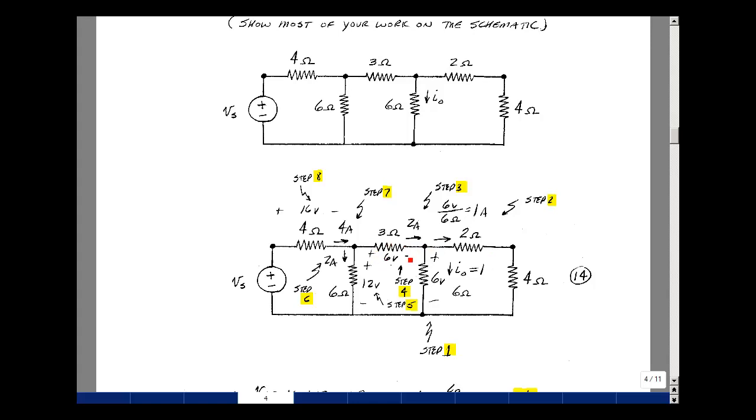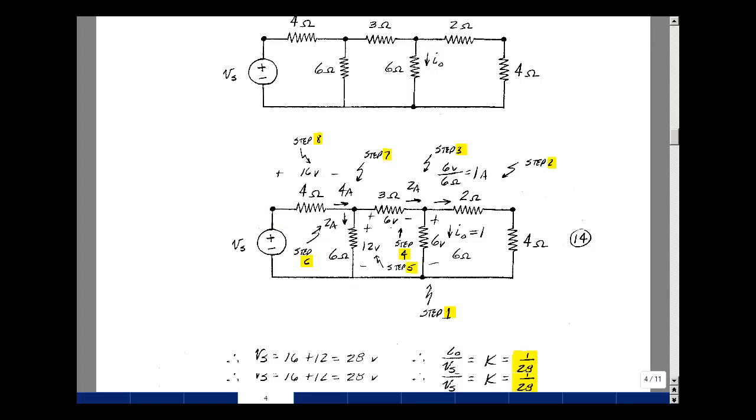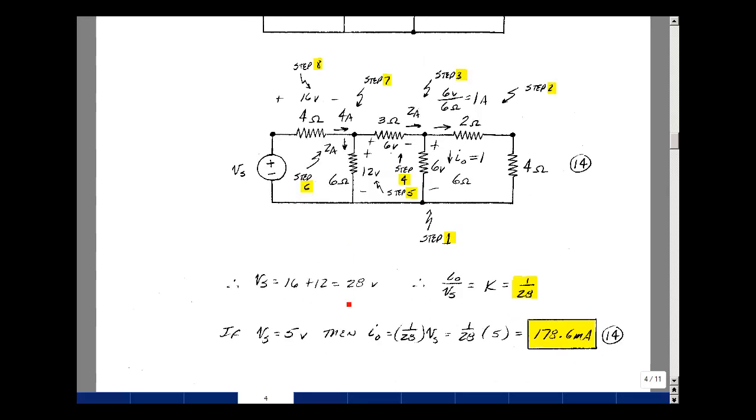2 amps going through 3 ohms is 6 volts. So the voltage at this node then would be 6 volts plus 6 volts or 12 volts. With 12 volts here and 6 ohms, I would have 2 amps flowing. 2 amps here and 2 amps here, I have 4 amps here. So the drop across here would be 16 volts. The voltage here would be 16 volts plus 12. So 28 volts produces 1 amp out, so our proportionality constant is 1 over 28. So I out is the proportionality constant times whatever V sub s is. If it's equal to 28 volts, we get 1 amp. If it's equal to 5 volts, we get 178.6 milliamps.